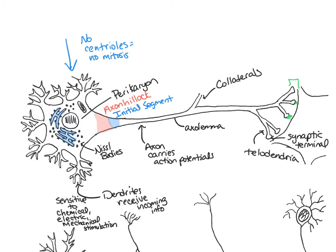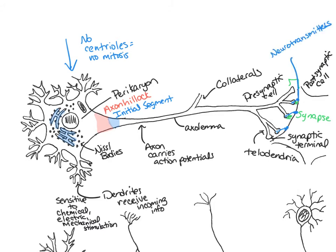The synapse is a special site where a neuron communicates with another cell. The cell sending the message has the synaptic terminal and is called the presynaptic cell. The cell receiving the message is the postsynaptic cell. Chemicals called neurotransmitters are released from synaptic vesicles in the synaptic terminal and bind to the postsynaptic cell, either stimulating or inhibiting it. The postsynaptic cell can be a neuron, smooth muscle, cardiac muscle, a gland, or adipose tissue.